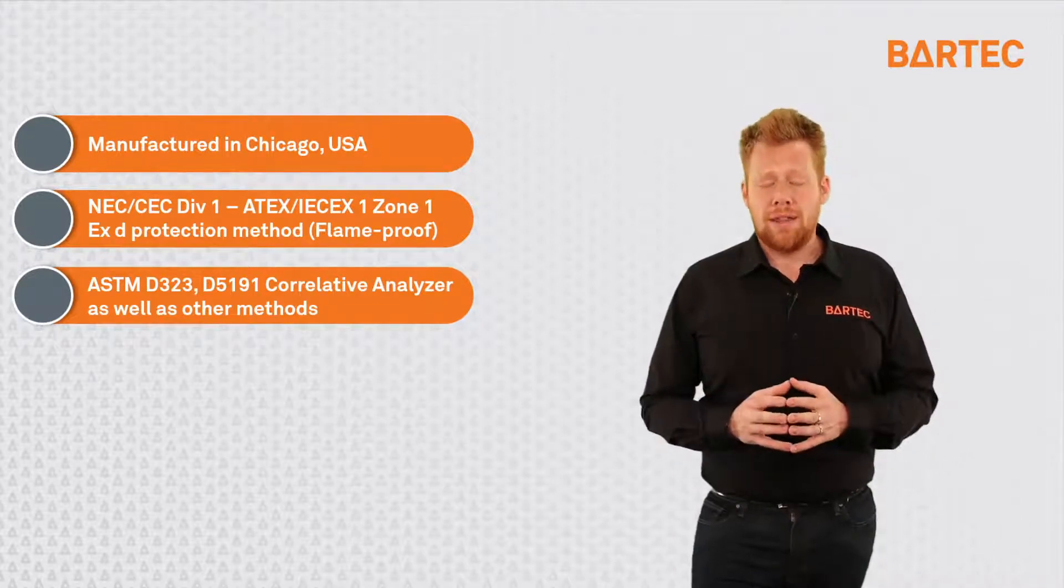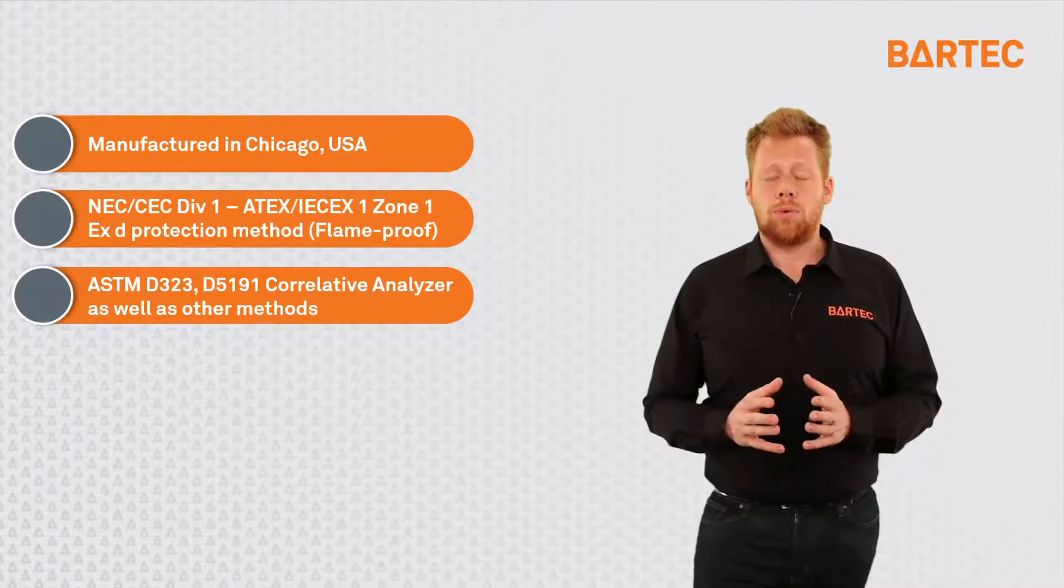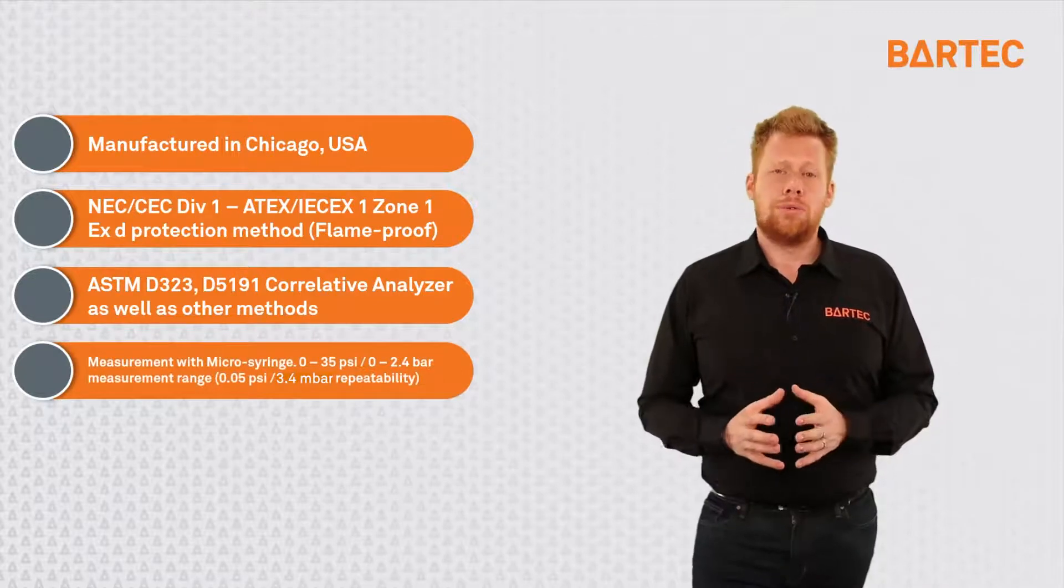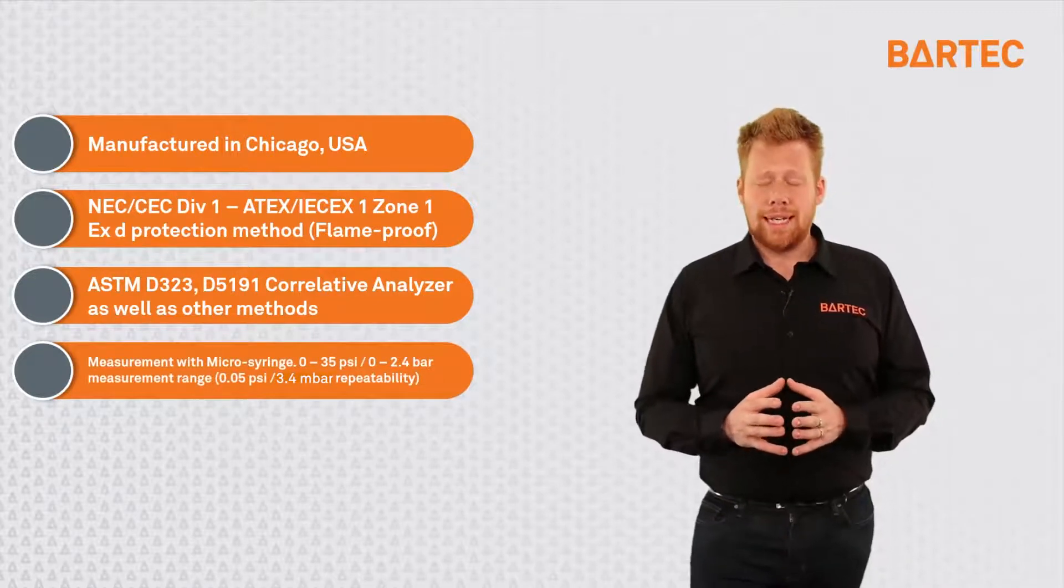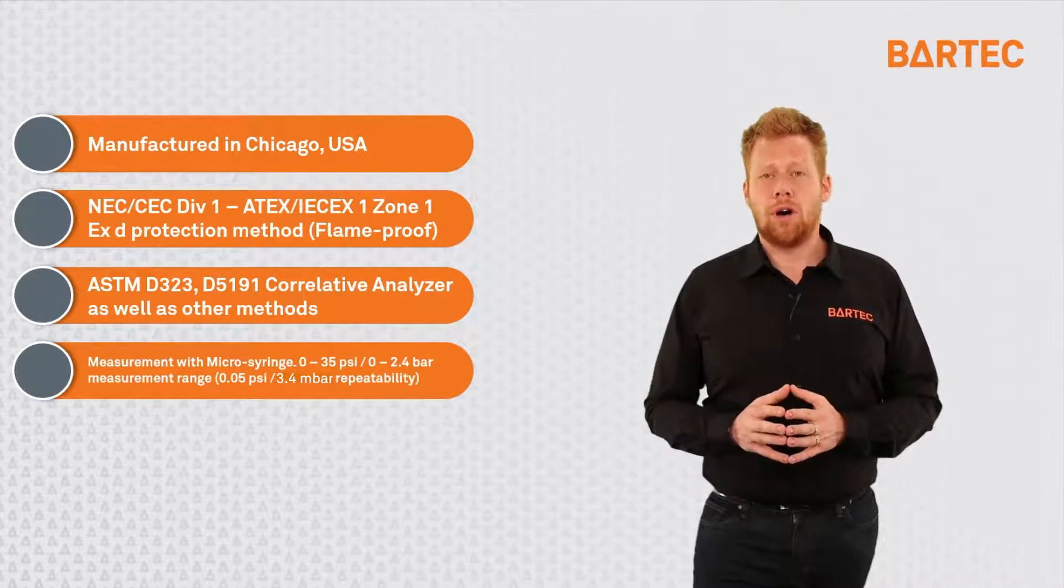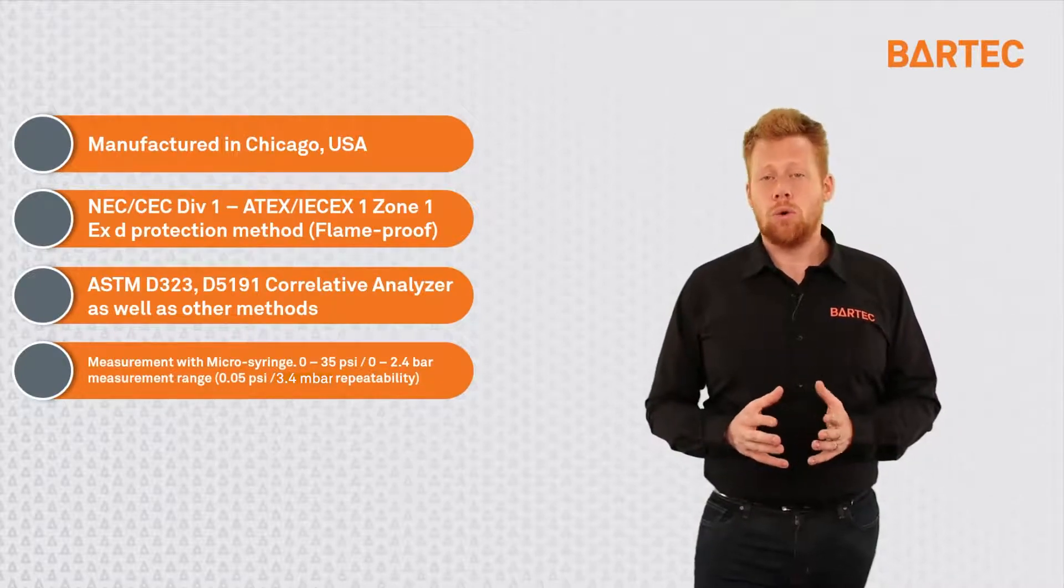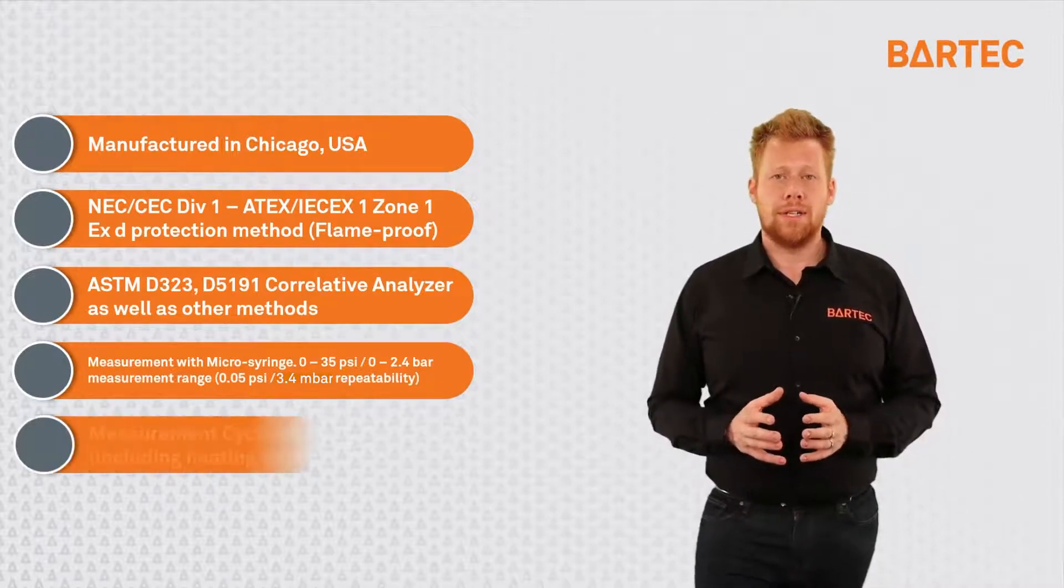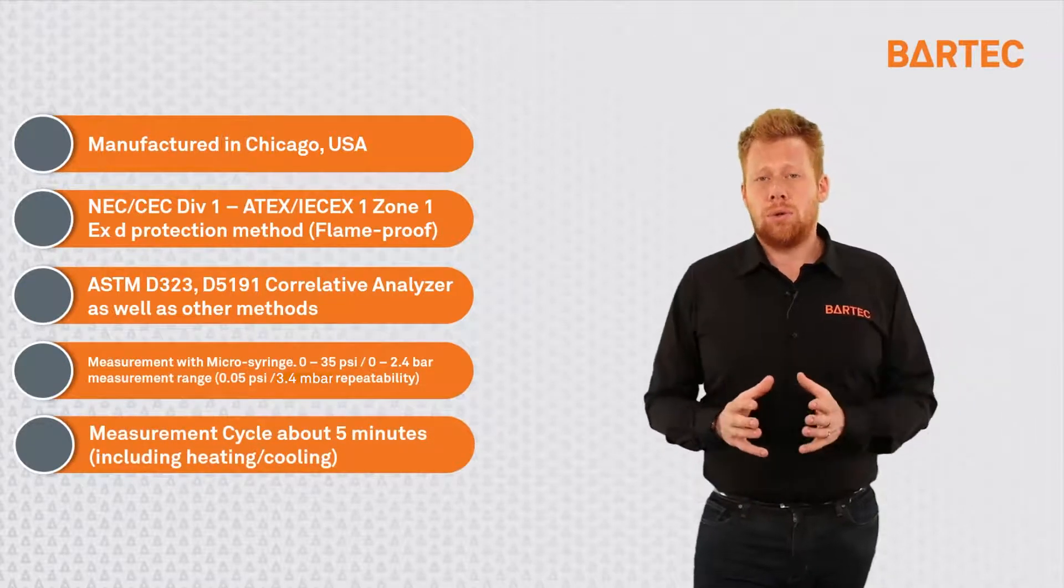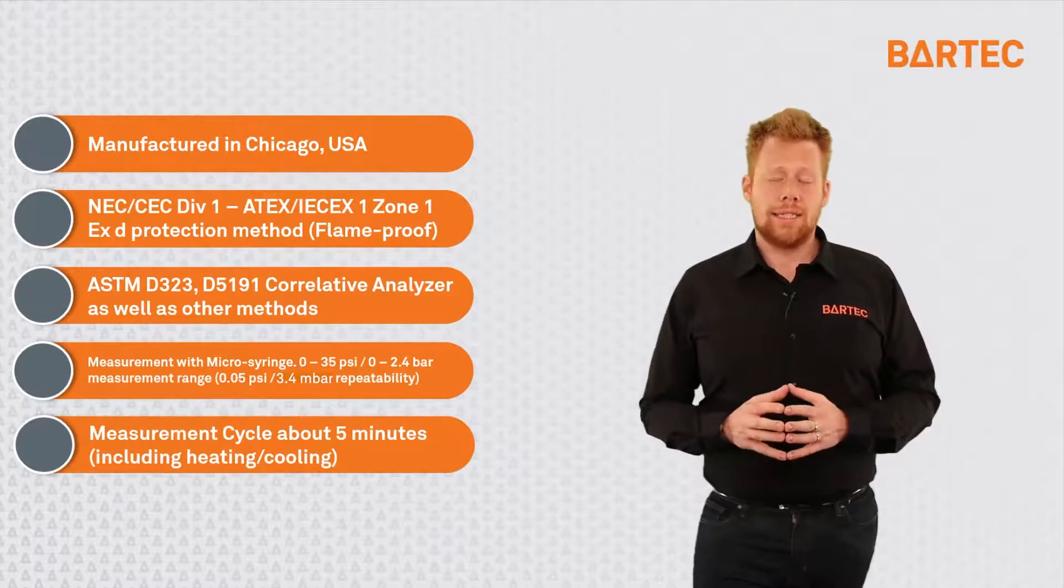The system is correlated to the ASTM D323 and D5191. We correlate to other methods, although more commonly D323 and D5191 are the ones requested. The system uses a micro syringe to do the measurement. The entire measurement range goes up to 35 psi 2.4 bars and has a repeatability of 0.05 psi or 2.4 millibars. Finally, the measurement cycle takes about five minutes in total to obtain the result. This includes heating and cooling that might be required.